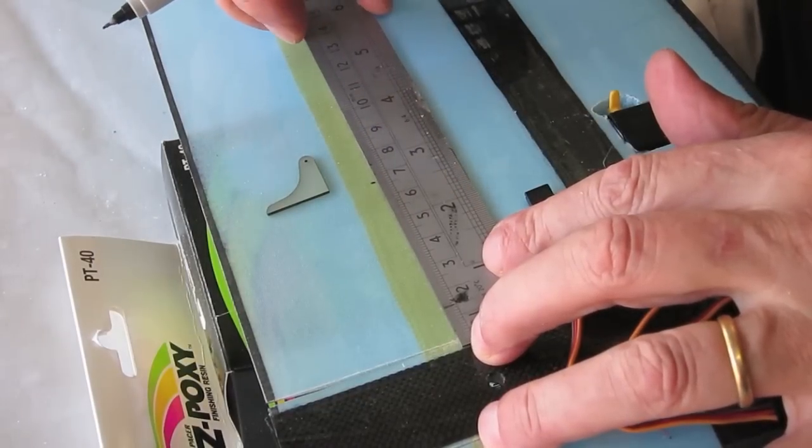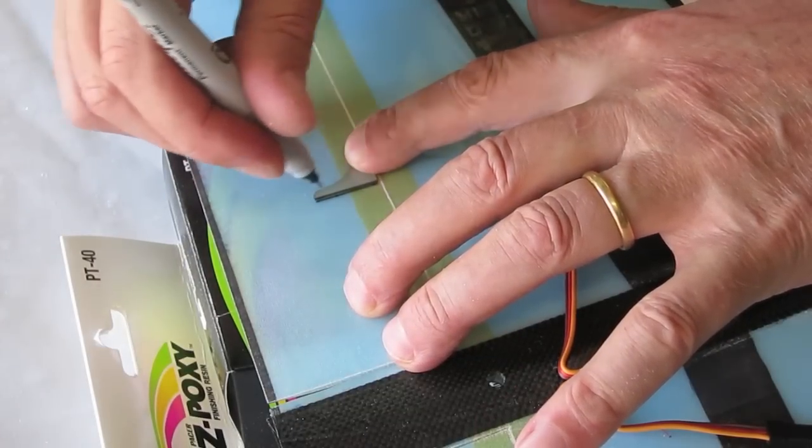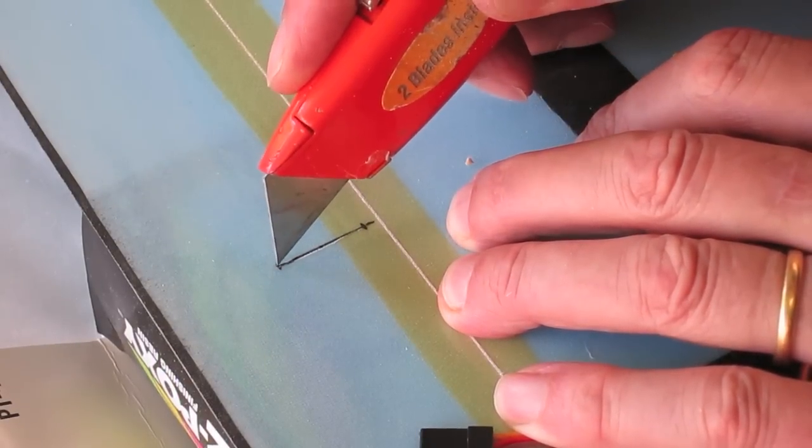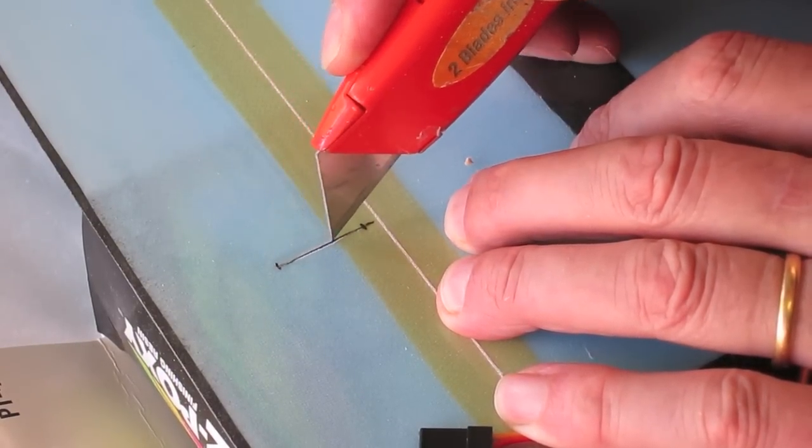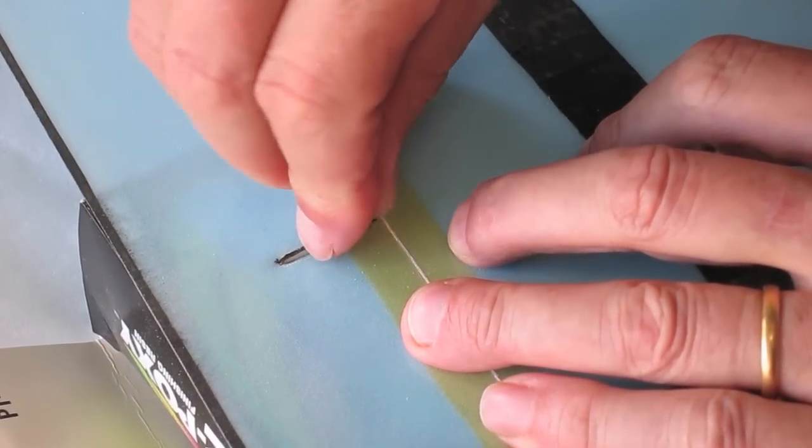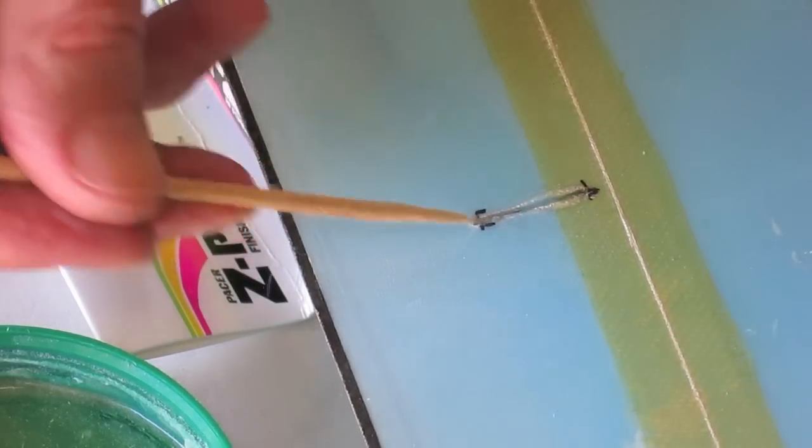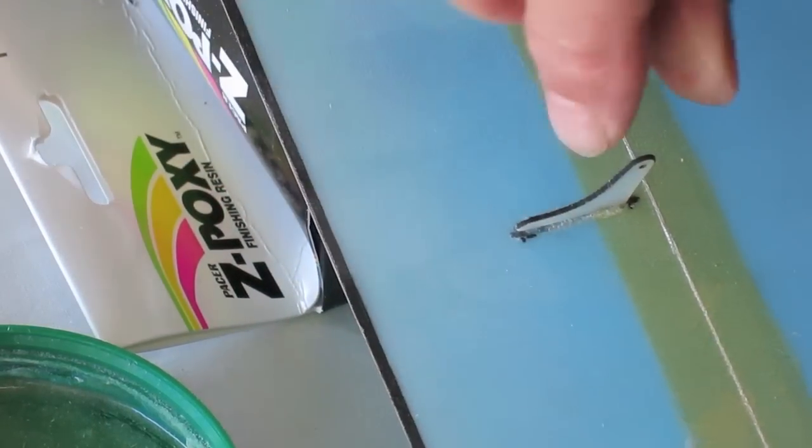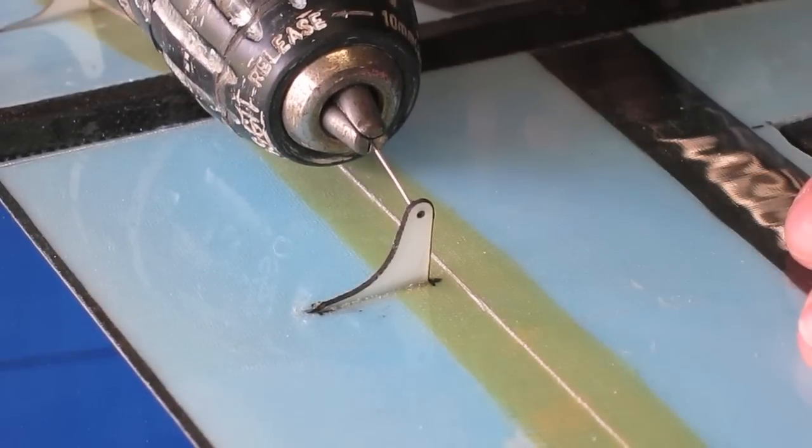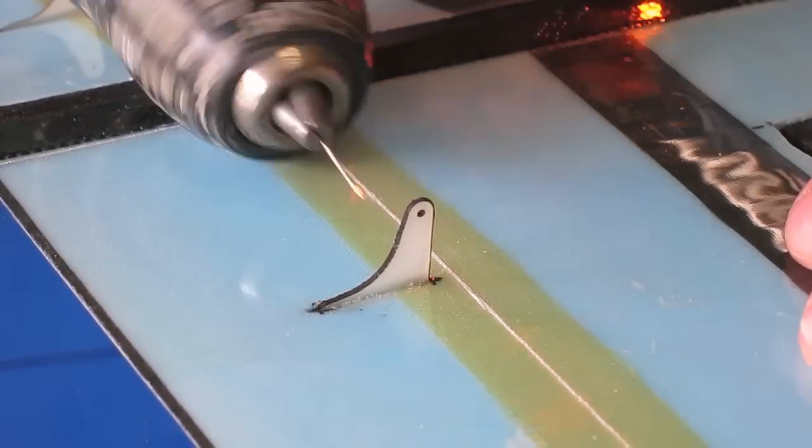Now marking the point where the control horn glues in. Cutting a little slot. Gluing it into position. I'm drilling out that hole to the right size using a piece of the push rod wire that was supplied.